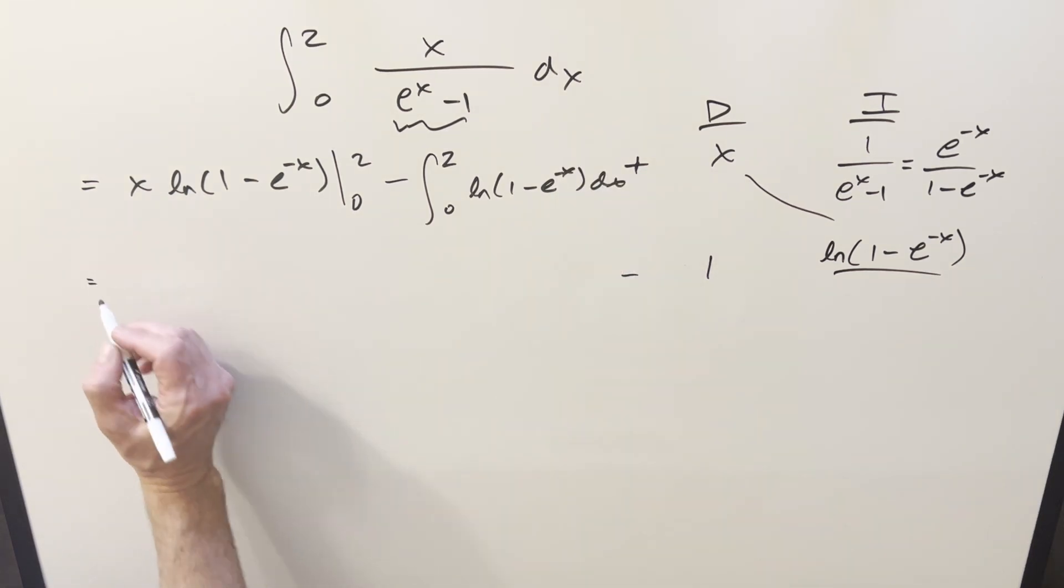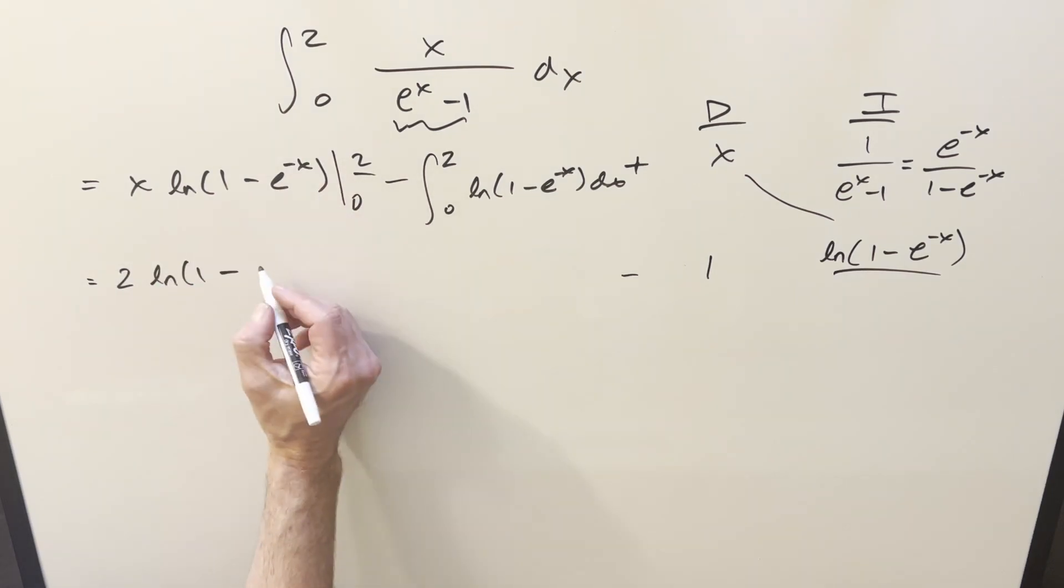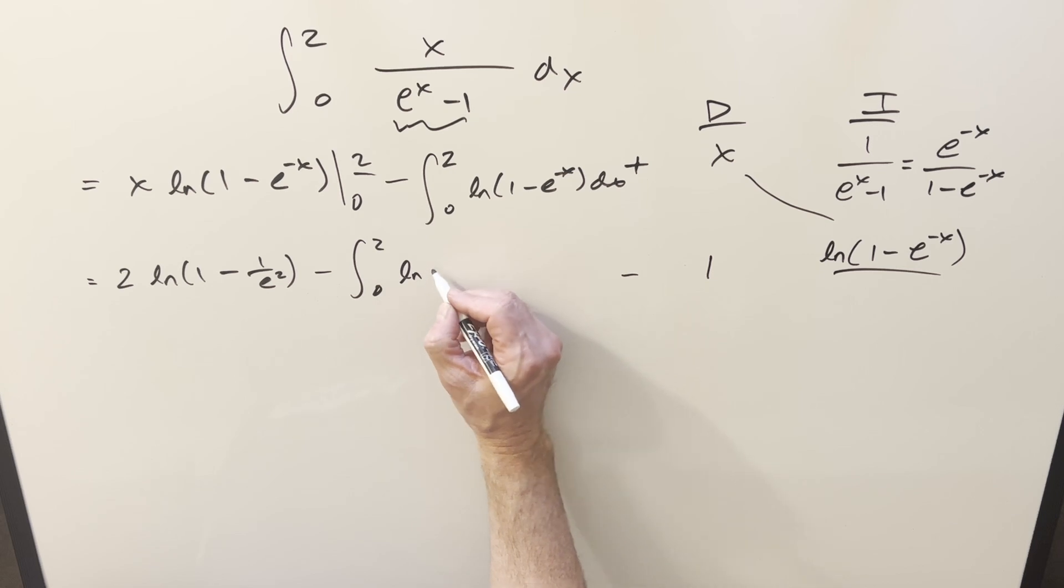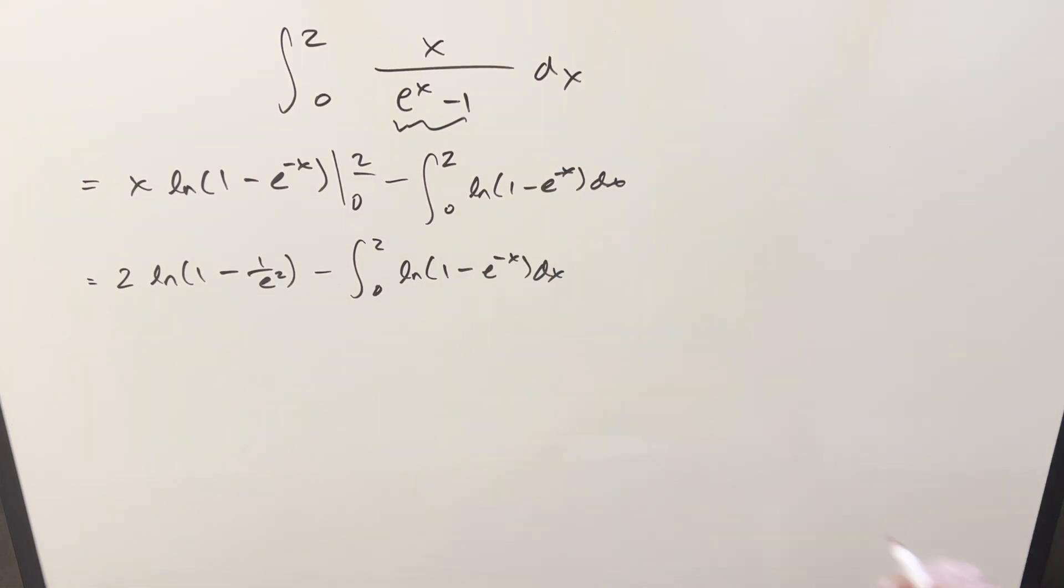Now, for this first part, we can just evaluate it. If we plug 2 in, we're going to get 2 natural log 1 minus e to the minus 2. Let's write it as 1 over e squared. And then now on this part, I don't know yet, so I'm just going to stall and rewrite it so we'll have the same integral right here.